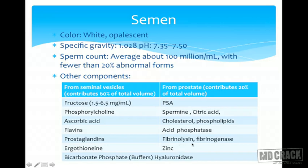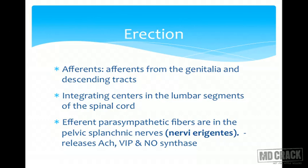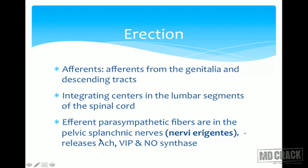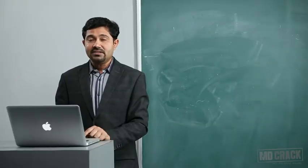The mechanism of erection: erection is a reflex required for coitus. Afferents come from the genitalia and descending tracts from higher centers. The integrating center is in the lumbar segment of the spinal cord. The efferents are mainly parasympathetic — erection is a parasympathetic process. The parasympathetic fibers, mainly the pelvic splanchnic nerves (also called nervi erigentes), cause release of vasodilators such as acetylcholine, VIP, and nitric oxide.